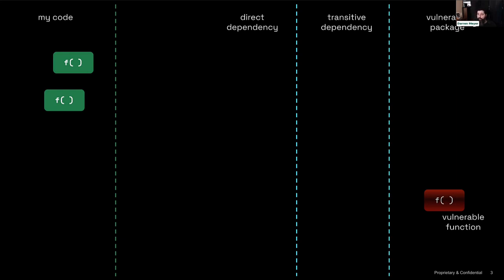I immediately have two questions. First: what part of this package is actually vulnerable? It's not the whole thing — there is a function, typically one function, sometimes a handful, that is vulnerable. Somebody has to identify what that function is, where the vulnerability is, what the problem is. And my second question is: is anything I'm doing in the green box able to pass control over to this vulnerable function?